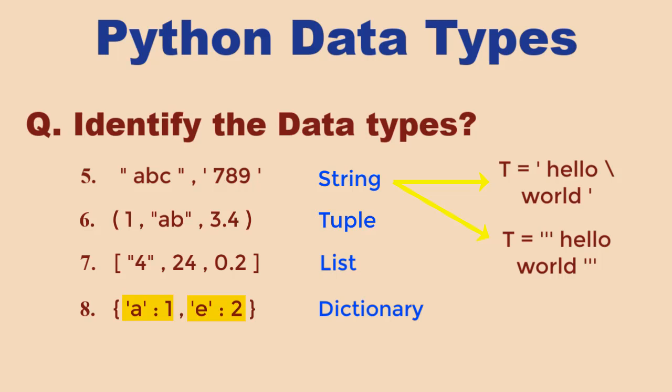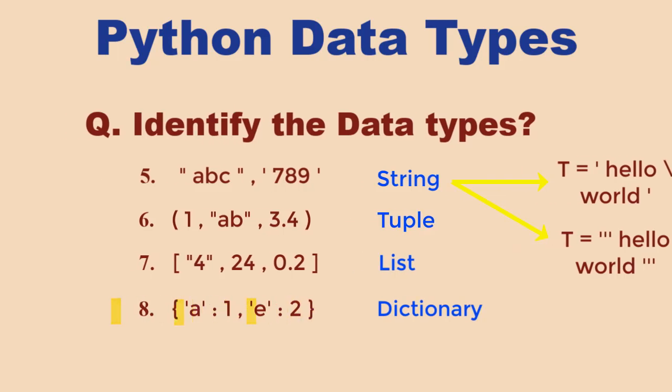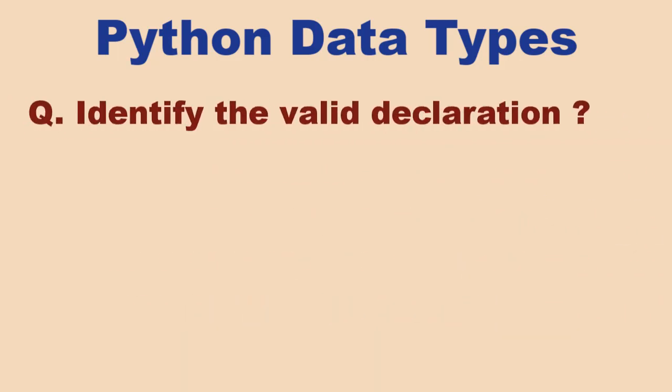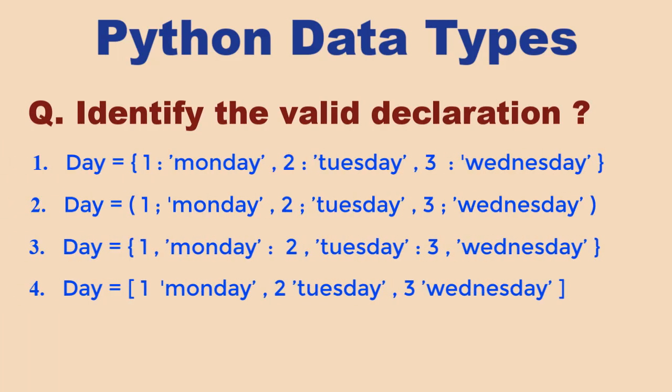Key-value pairs have a colon in between and are separated by commas and enclosed in curly braces. The question could also be to identify valid declarations, like here: which is the correct form of declaration of a dictionary?